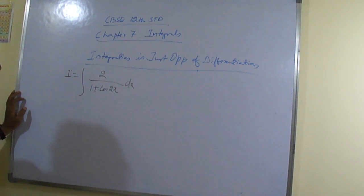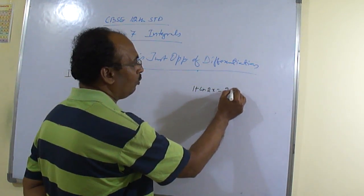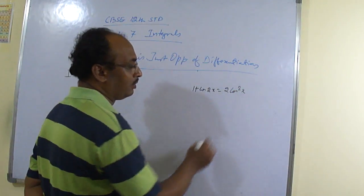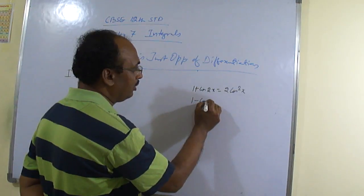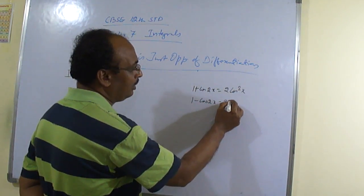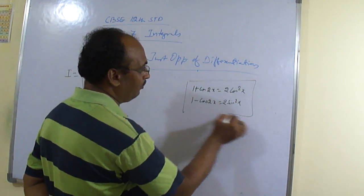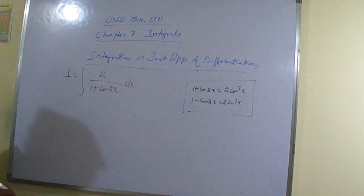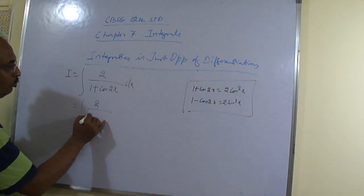any formula you are remembering? 2 sin square x. Very good. 2 sin square x, very good. Very good, very good. So, 1 plus cos 2x is equal to twice cos square x. Okay, twice cos square x. 1 minus cos 2x is equal to twice sin square x. So, this formula is very important, very good to remember. So, twice cos square x you can write.